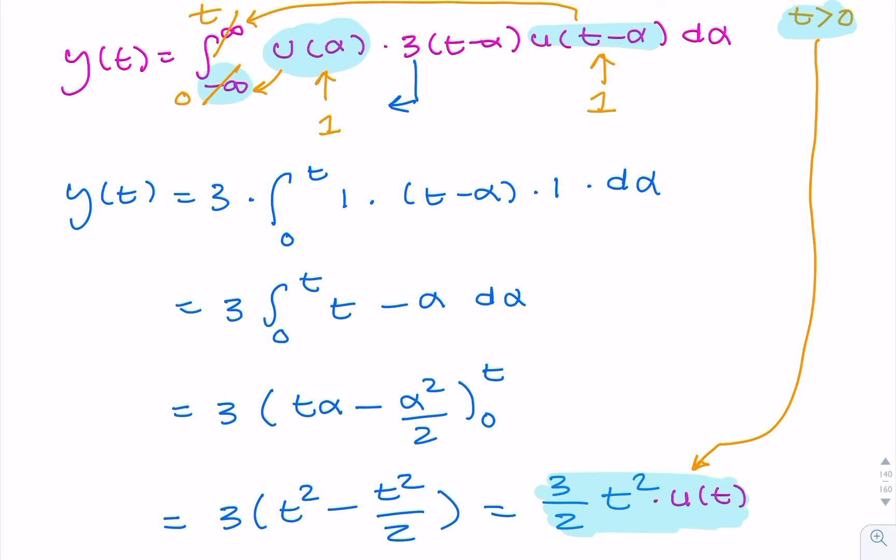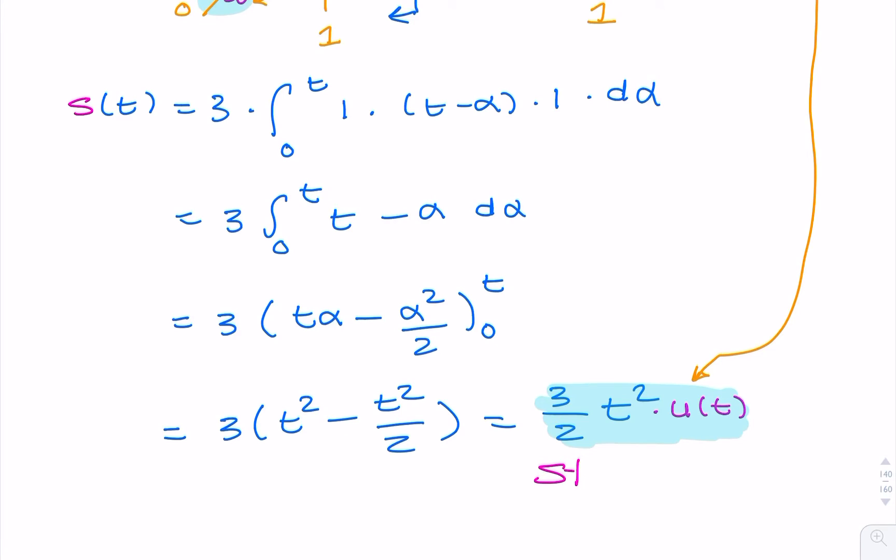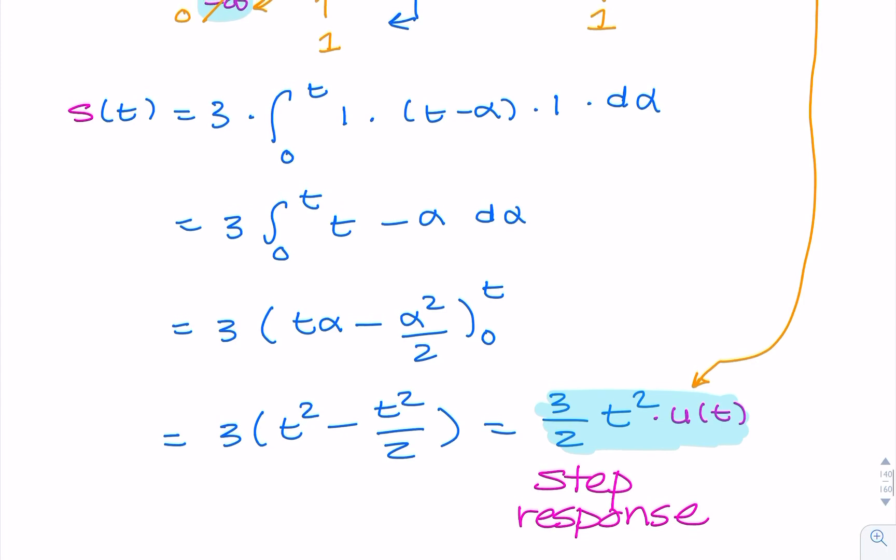So what we've just found is the step response. So rather than calling it y(t), we could have called it s(t). This is the step response. This is the output when the input happens to be a unit step function. What we could have done is just integrated the impulse response, and we would have got the same result. But I found it here using the convolution integral.